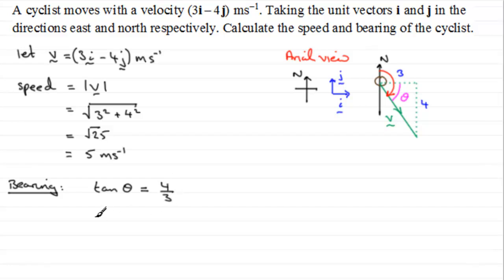And to get theta we therefore find theta by taking the inverse tan of both sides. So we've got theta equals the inverse tan of 4 thirds. And if we work in degrees, make sure your calculator is in degrees mode, then what you get is 53.130 and so on degrees.